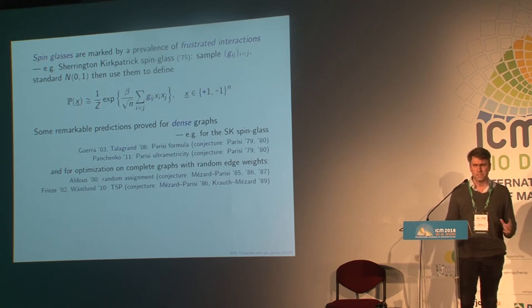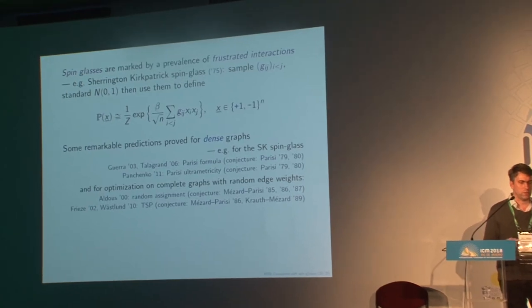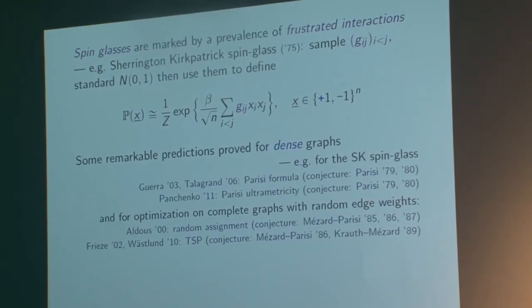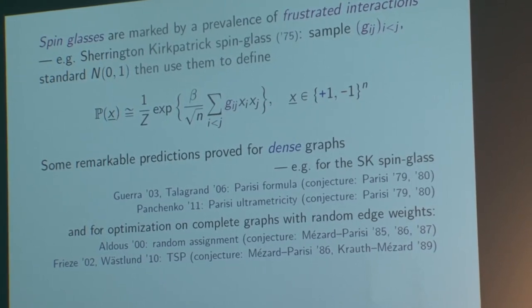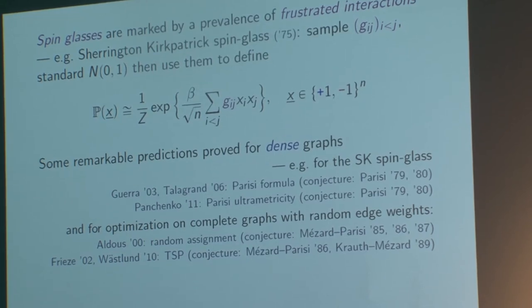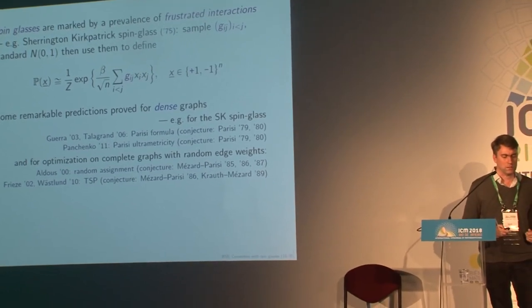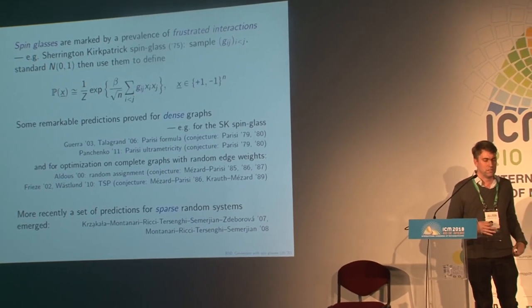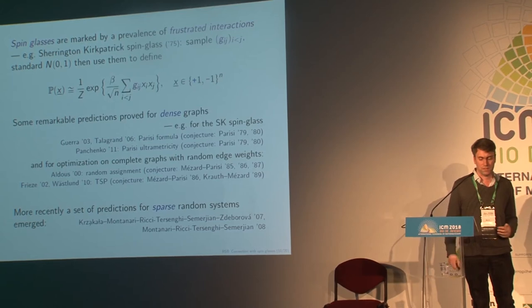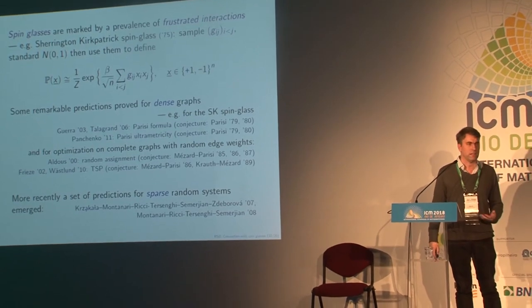These are really dense models with interactions between all pairs of variables, unlike the random CSPs we're talking about that are really sparse. But even as early as the mid-1980s, Mézard and Parisi suggested that the same sorts of methods should be applicable. And Mézard, Parisi, and Zecchina made a lot of progress on this. The detailed description I'm going to give now is based on work of Krzakala, Montanari, Ricci-Tersenghi, Semerjian, and Zdeborová.